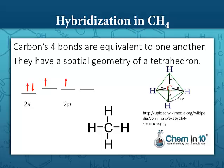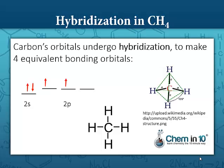And because it forms these four bonds in the spatial geometry of a tetrahedron, we know that these four bonds are equivalent to one another. So how does carbon do this? It does it through a process of hybridization. Carbon's orbitals undergo hybridization to make four equivalent bonding orbitals.